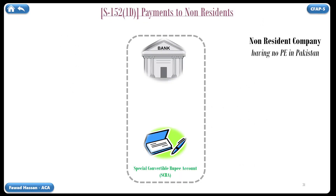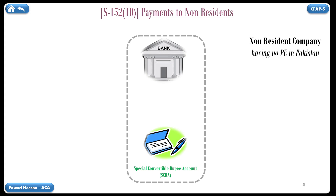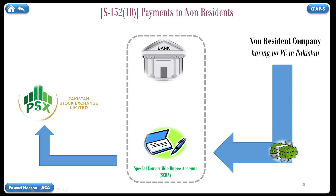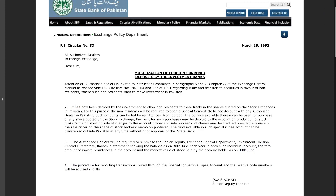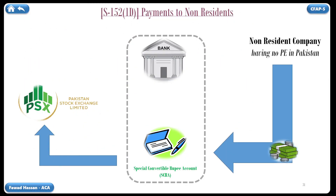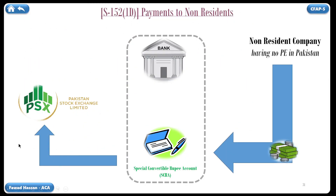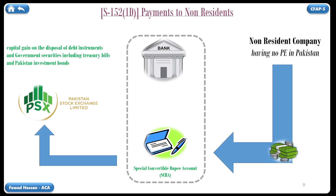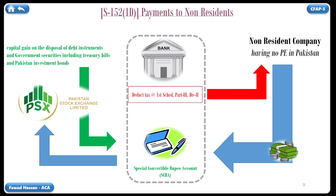The fund available in such special rupee account can be transferred outside Pakistan at any time without prior approval of the State Bank of Pakistan. The transaction flow will be such that the non-resident corporate investor will deposit funds in SCRA, then use these funds to invest in securities listed on the stock exchange. Capital gains arising on the disposal of debt instruments and government securities, including treasury bills and Pakistan Investment Bonds, will be credited to SCRA. The Pakistani bank will deduct tax from these capital gains.